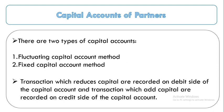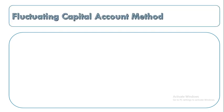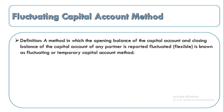Now let us study the fluctuating capital account method. A method in which the opening balance and closing balance of a partner's capital account are different is known as the fluctuating or temporary capital account method. This method shows flexibility — the opening balance and the closing balance at the end of the year are different.